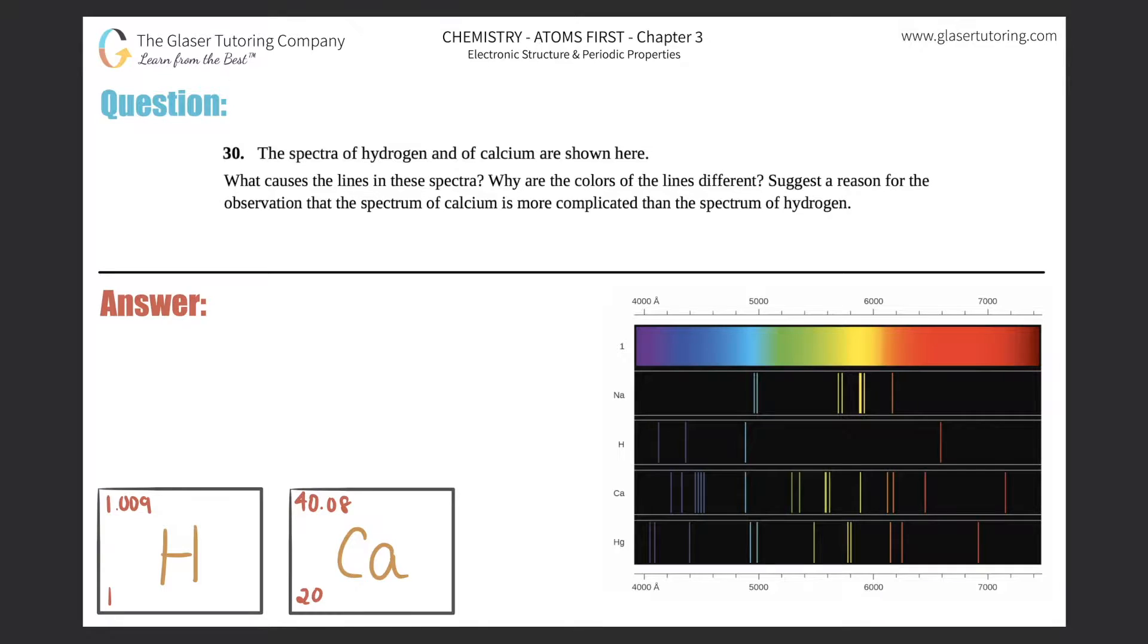Number 30: The spectra of hydrogen and of calcium are shown here. What causes the lines in the spectra? Why are the colors of the lines different? And suggest a reason for the observation that the spectrum of calcium is more complicated than the spectrum of hydrogen. All right, so this looks like a three-part question, right?